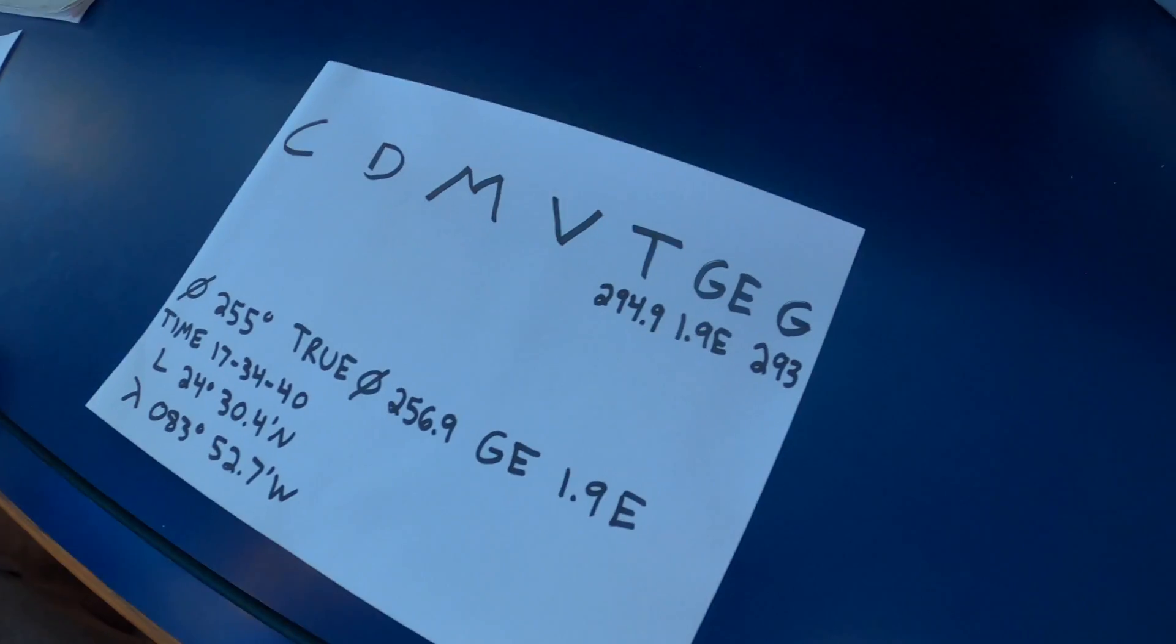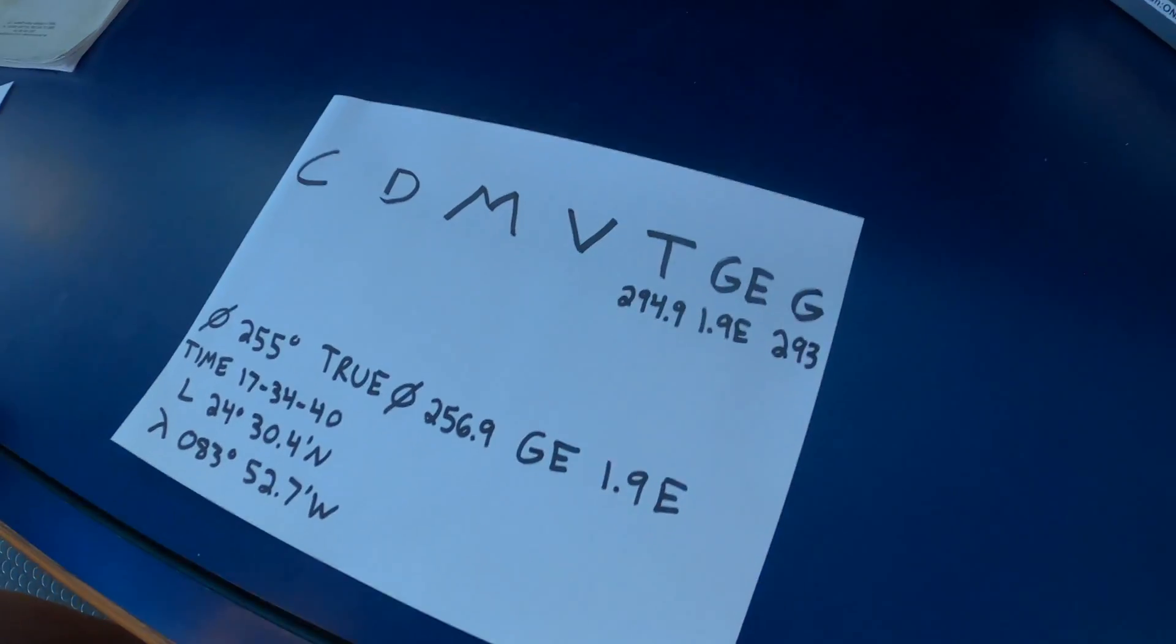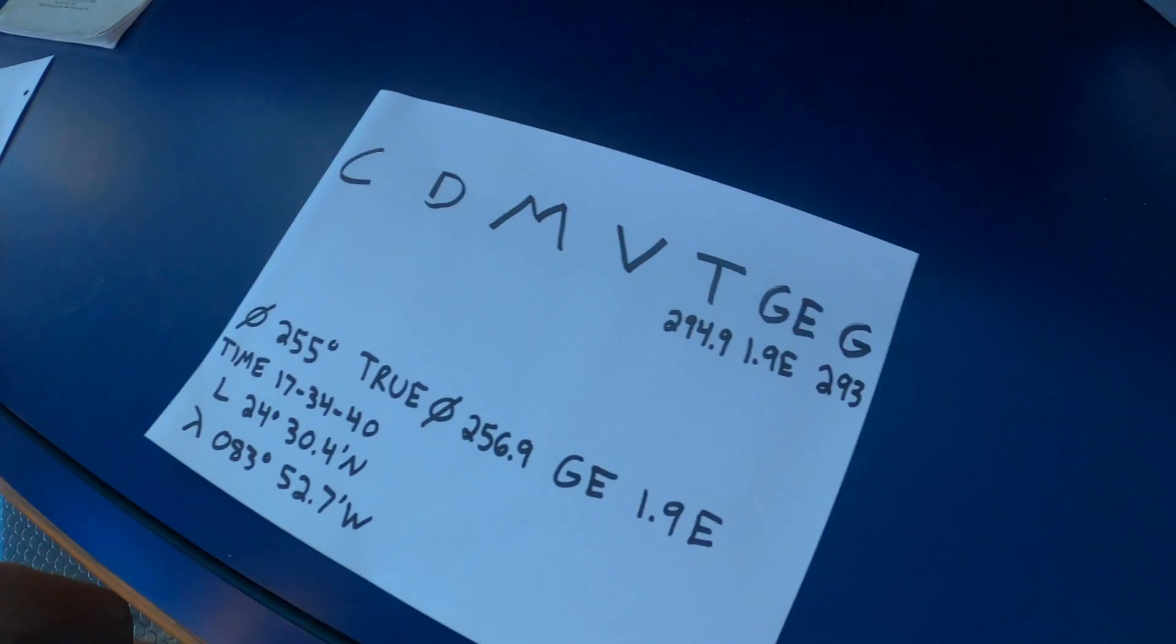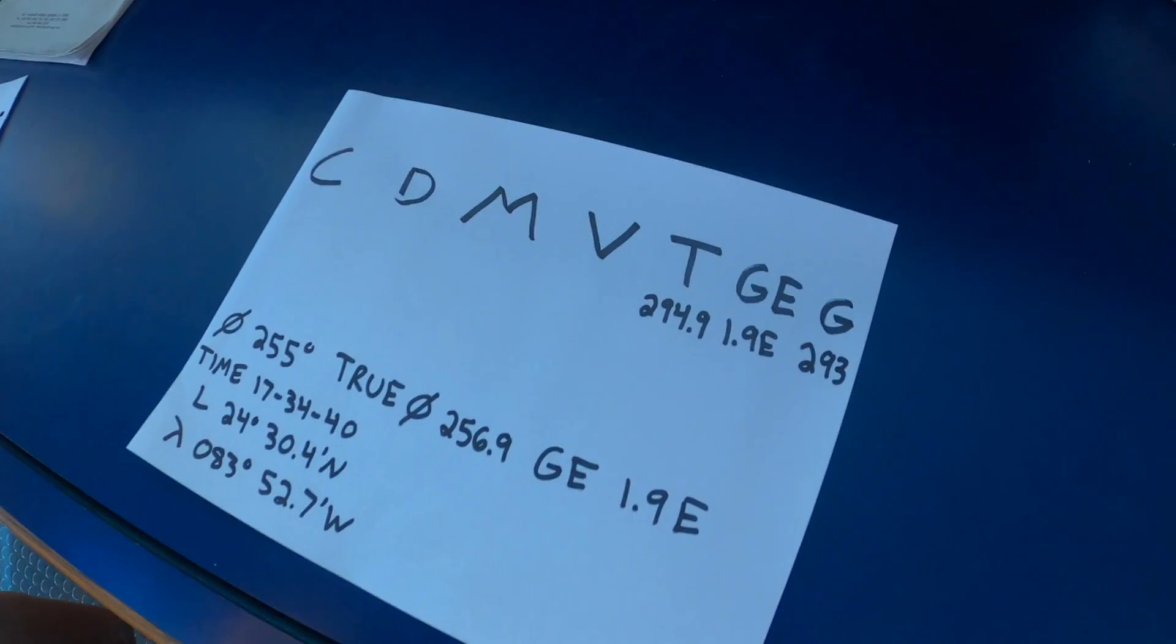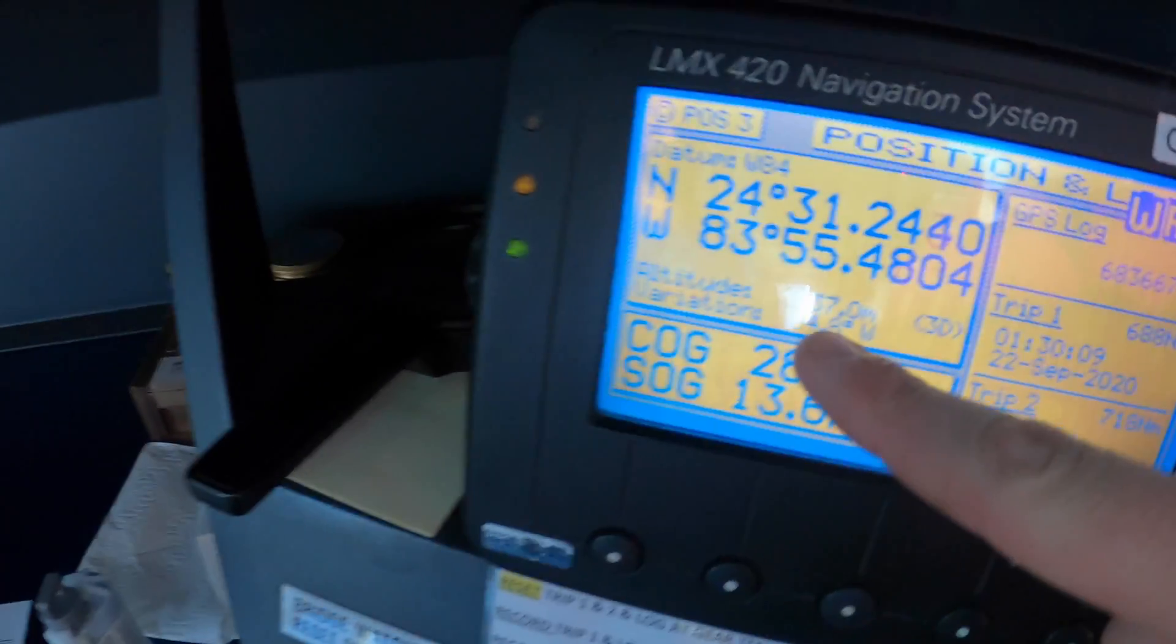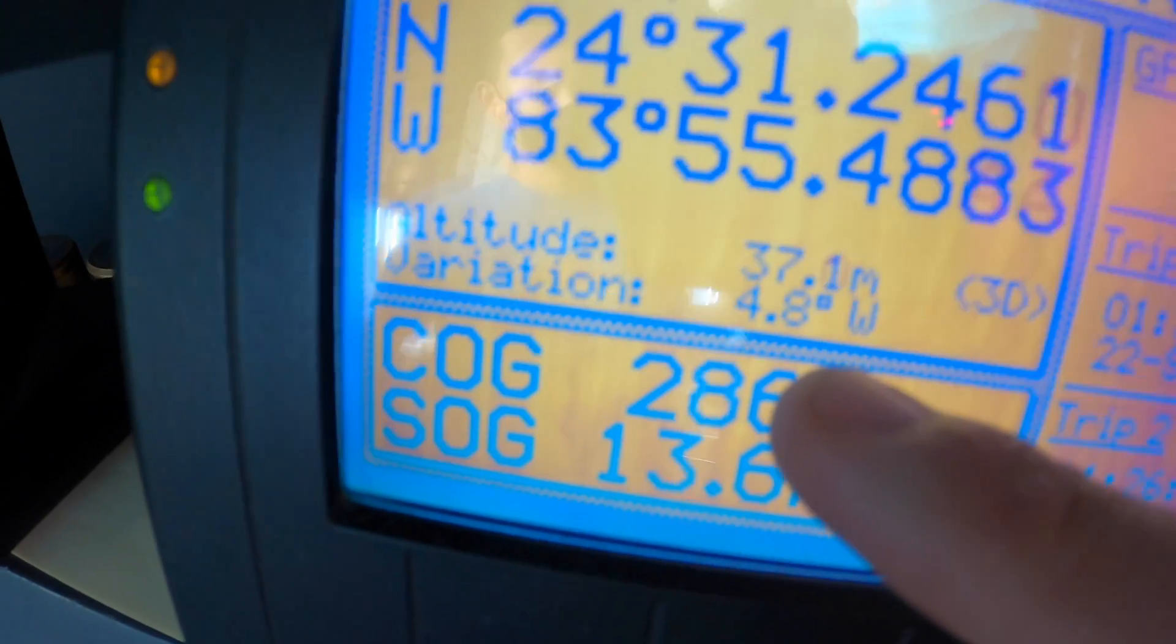Next we got to get the variation. Variation differs by our position on the earth due to magnetic fields. Normally you would pull this off of a paper chart, but since we're on a ship that is completely digital, you can refer to the GPS, which shows the variation based on our position. In this case, it's 4.8 degrees west.